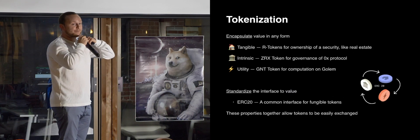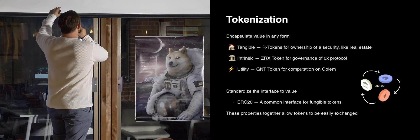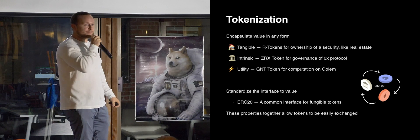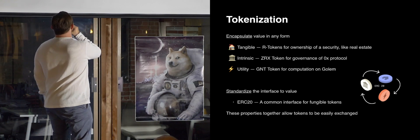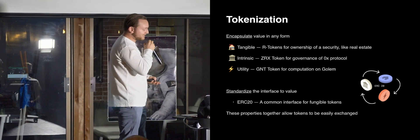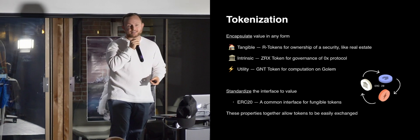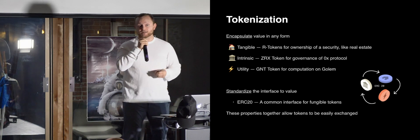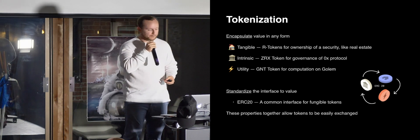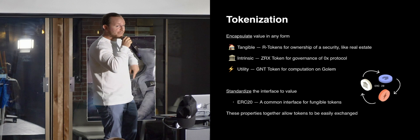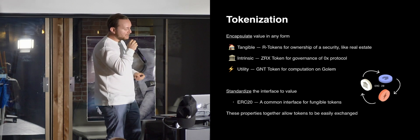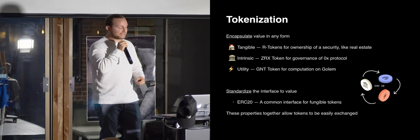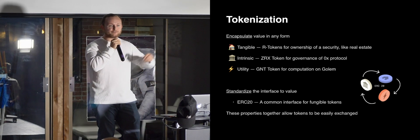Tokenization allows us to encapsulate this value. On Ethereum, tokens can encapsulate ownership over a security like real estate. The 0x token encapsulates the right to participate in governance on the 0x protocol, and the GNT token encapsulates the ability to compute on the Golem network. ERC-20 provides a common interface to all of these tokens, so combined, encapsulation and common interfaces make it really easy to exchange this value and let it flow throughout the network.